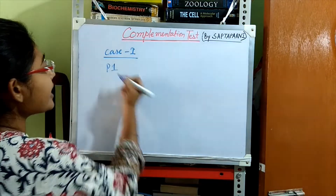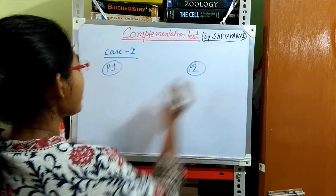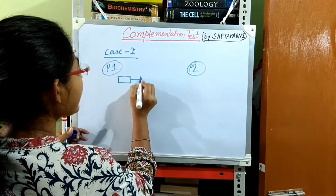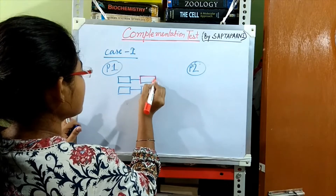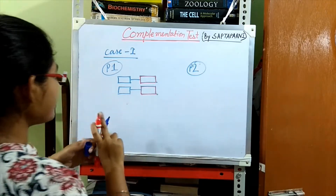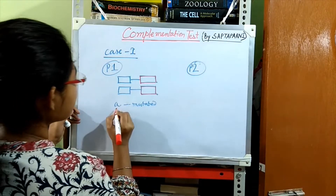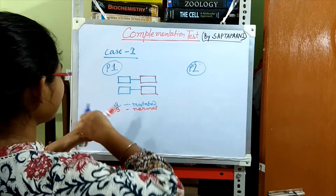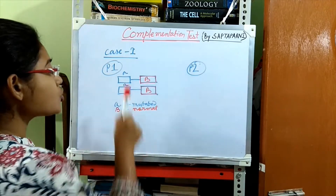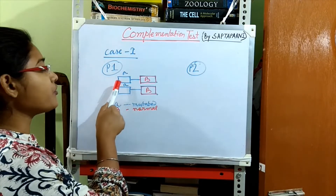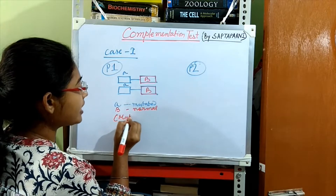In Case 1, consider Parent 1 and Parent 2. The genotype of Parent 1 is one where the A gene is mutated but the B gene is normal. So, A is mutated but B is normal. As a result, there will be no functional protein for gene A, but there will be functional protein for gene B, and they will show a mutant phenotype.